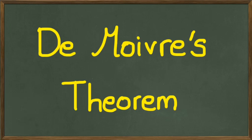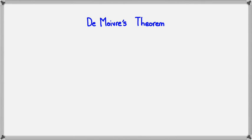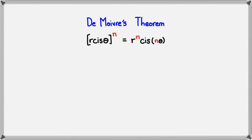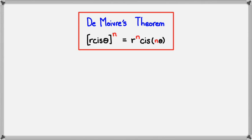Hey guys, we're going to be covering De Moivre's Theorem in this session, so let's get started. De Moivre's Theorem states that if you have r cis θ raised to the power of n, then this is equal to r to the power of n, cis n times θ. So this is what De Moivre's Theorem states.